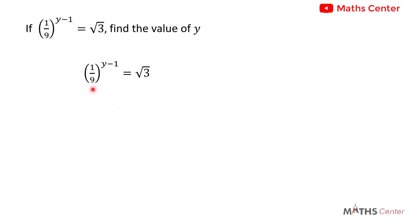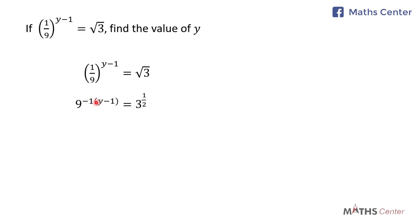From indices we know that 1 divided by 9 can be written as 9 exponent negative 1. But we already have y minus 1 here, so we will have 9 exponent negative 1 times y minus 1. Since y minus 1 is a binomial, we put y minus 1 in a bracket. And square root of 3 can be written as 3 exponent 1 divided by 2.